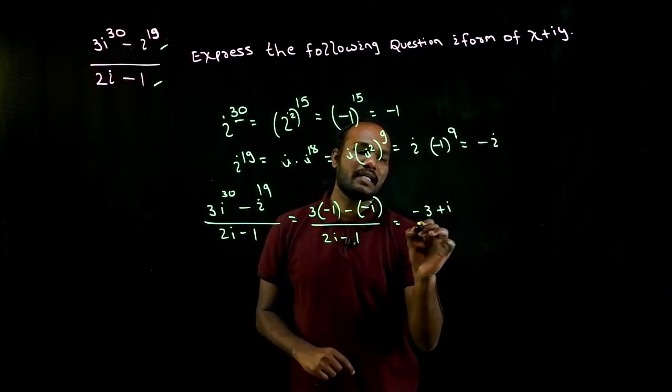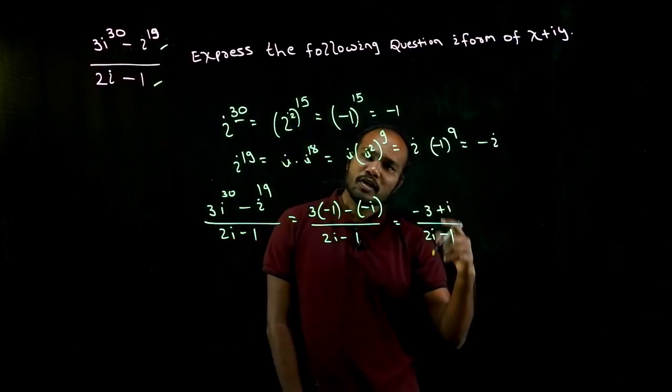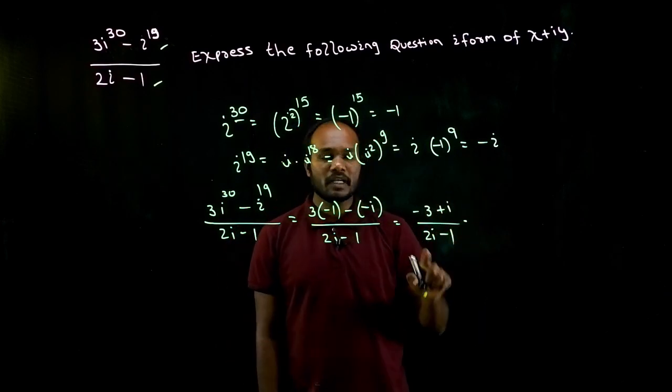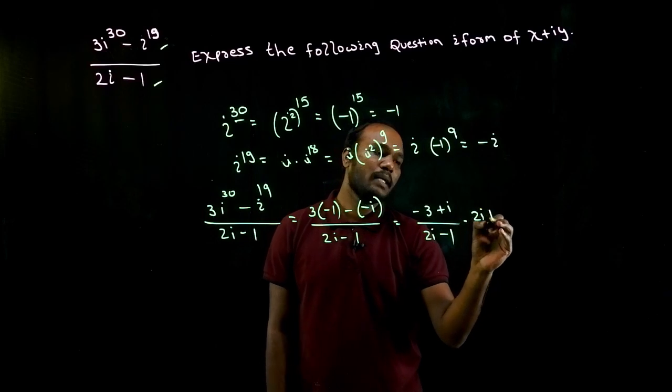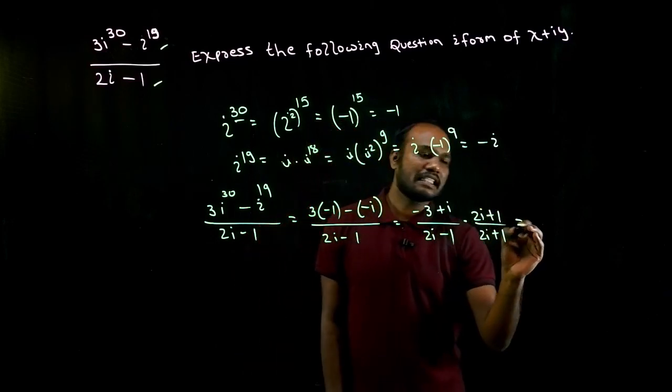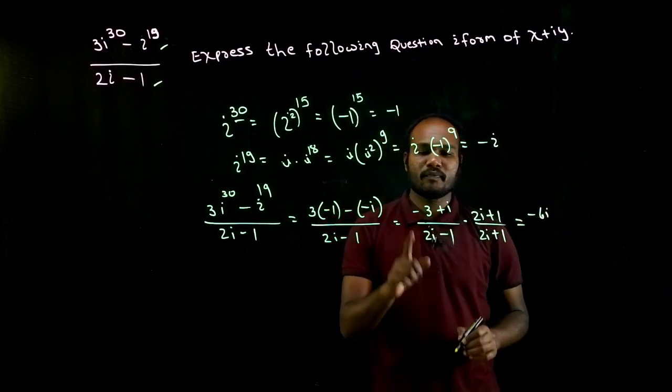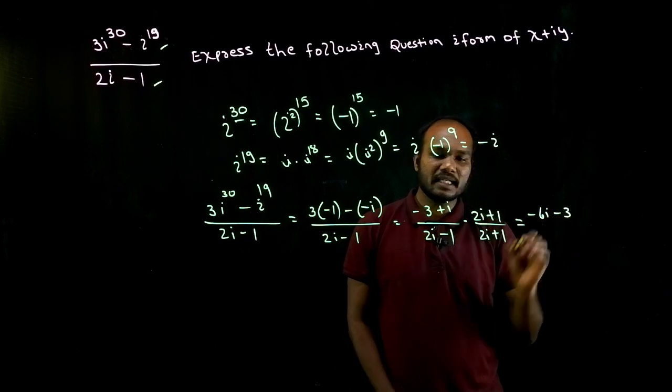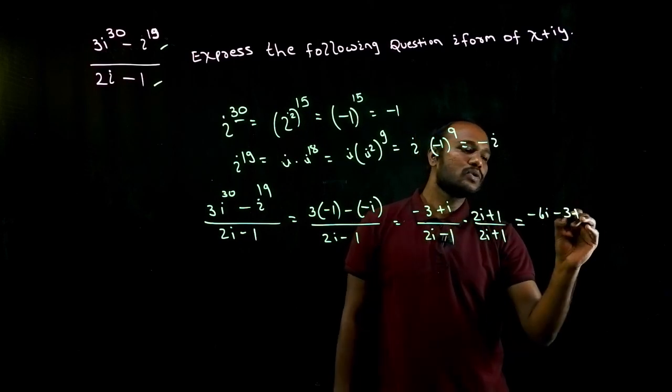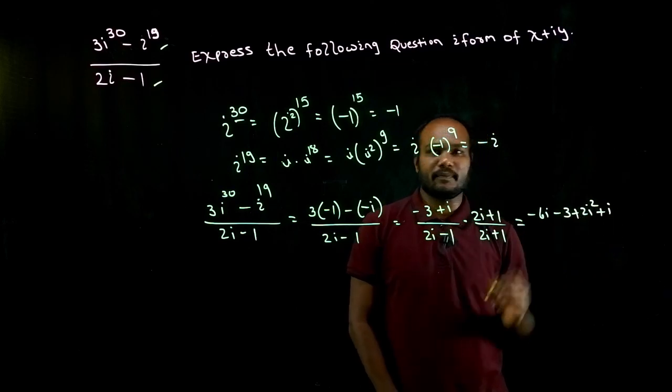So 3 into minus 1 is minus 3, minus into minus is plus i, divided by 2i minus 1. See, numerator also we have a complex number, denominator also we have a complex number. So multiply with conjugate of this, that is 2i plus 1 divided by 2i plus 1. So if I just want to multiply, minus 3 into 2i is minus 6i, minus 3 into plus 1 is minus 3, i into 2i is 2i square, and i into plus 1 is plus i.